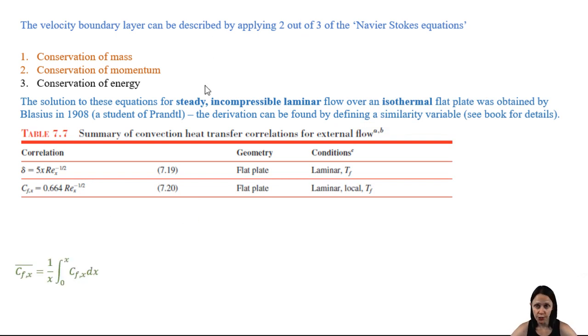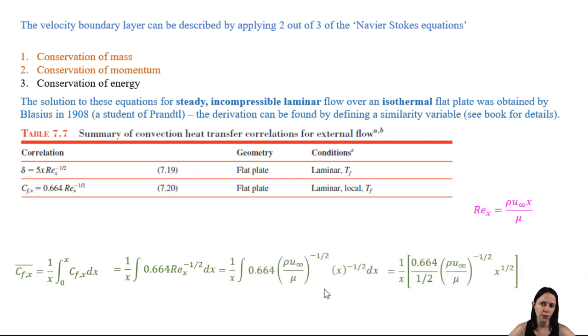We can also relate the local friction coefficient to the average friction coefficient taken from the leading edge to some location x. So if you want the average from 0 to L, you're just going to be integrating from 0 to L and then dividing everything by L. So here's our local friction coefficient defined in terms of the Reynolds number. I have the definition of my Reynolds number right here. And if I integrate with respect to x, you can see that I eventually get a final solution that looks similar, but I just have 1.328 instead of 0.664. And that brings me to the next equation on my equation sheet.